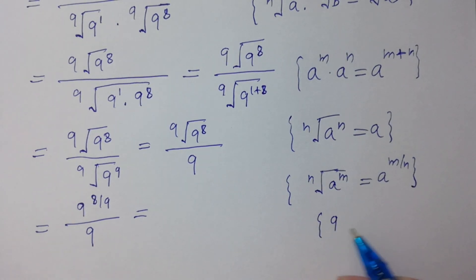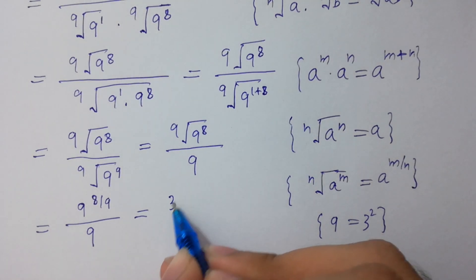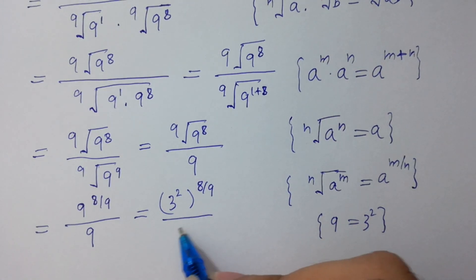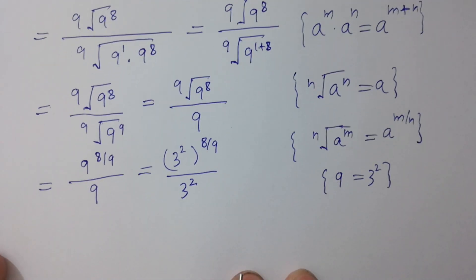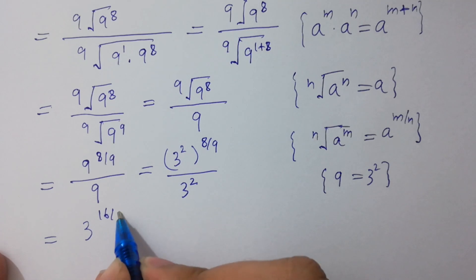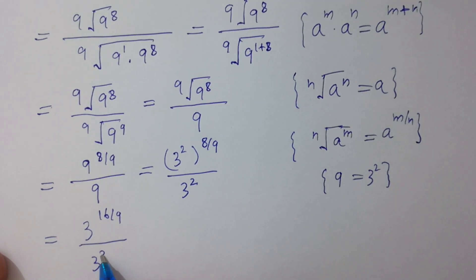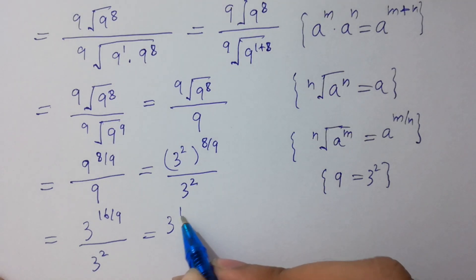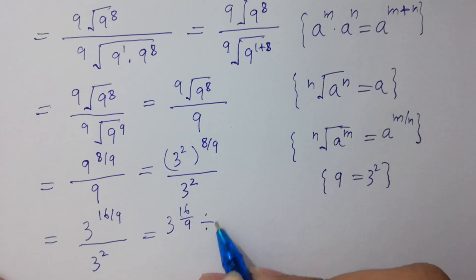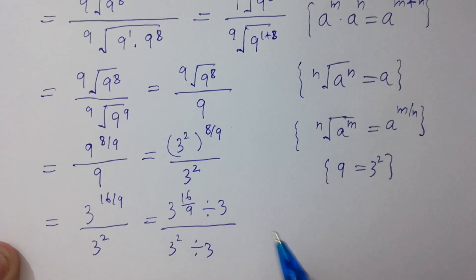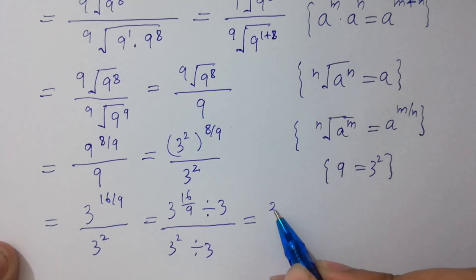Since 9 equals 3 squared, so 3 squared to the power 8 over 9, divided by 9 as it is. This simplifies to 3 to the power 16 over 9, divided by 9. This is the same as 3 to the power 16 over 9.